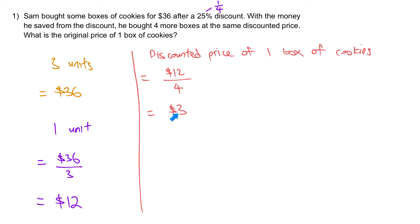Now if you think about it, this box of cookies is actually after a 25% discount. Therefore, to find back the original price, the original price of one box of cookies. This is after 25%, right? So we will take the $3 divided by 75 to figure out what is 1%. After that, we times 100 to get the 100%, which is the original price. And that will give you $4 as the answer.